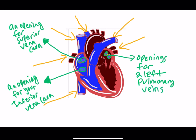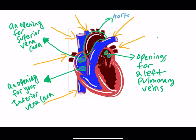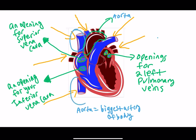Let's look at this huge artery right here. This huge artery altogether is called the aorta. The aorta is, in fact, the biggest artery of the body — just like the superior vena cava and inferior vena cava were the biggest veins of your body.